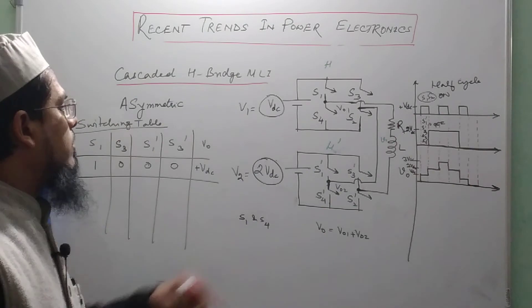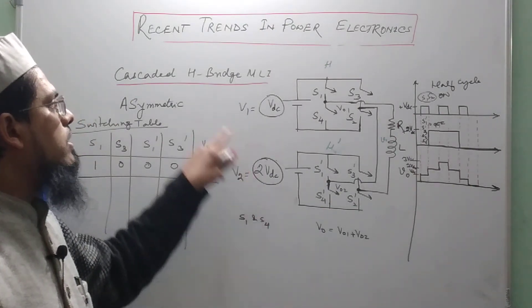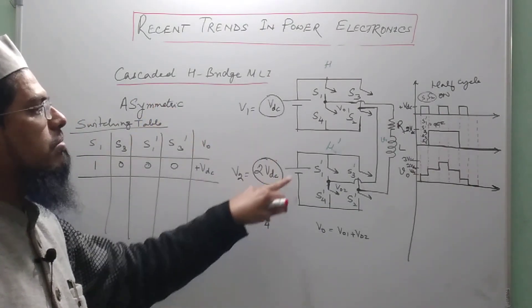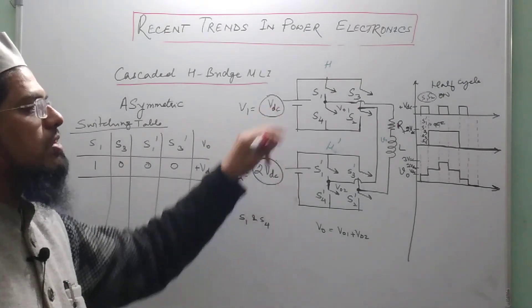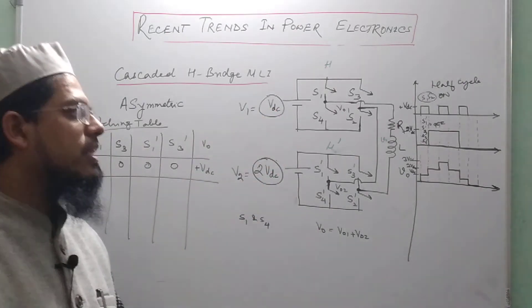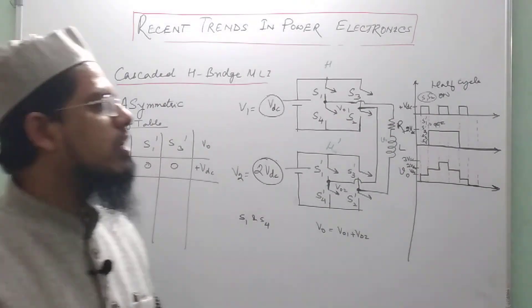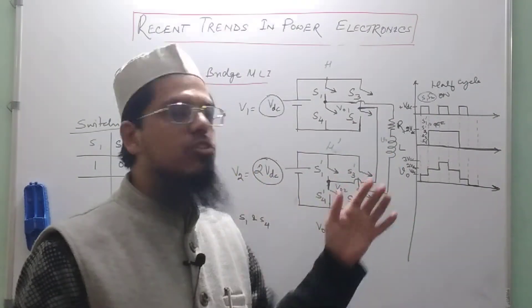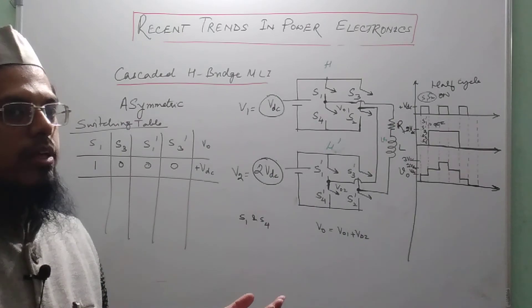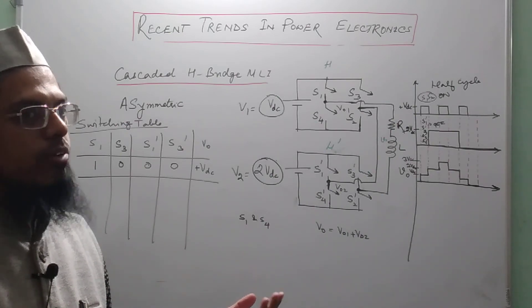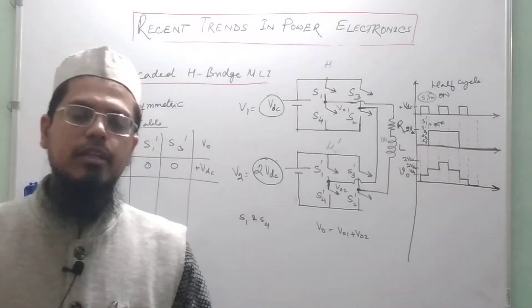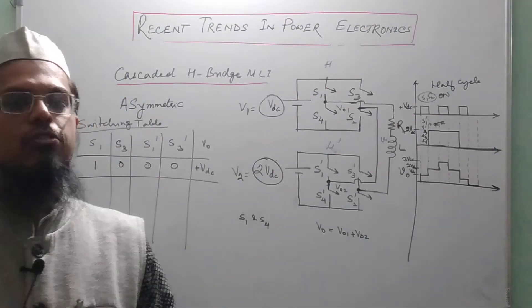I leave the 3V_DC asymmetric configuration — in which one battery is 3 times the other — for you to work out. You will see that the output voltage level increases to 9. I hope you enjoyed the lecture. Thank you for watching.